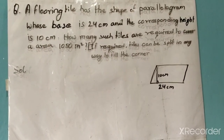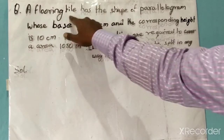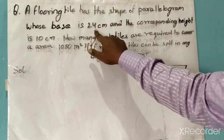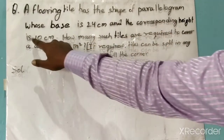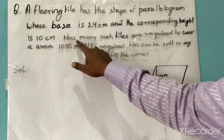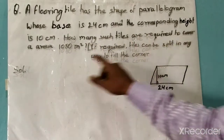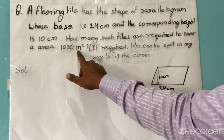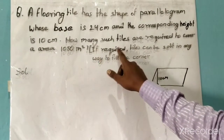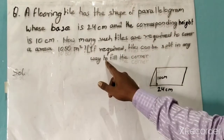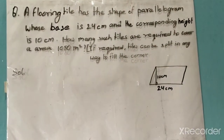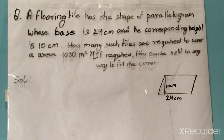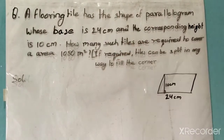Today's question is: a flooring tile has the shape of a parallelogram whose base is 24 centimeters and the corresponding height is 10 centimeters. How many such tiles are required to cover an area of 1080 square meters, if required tiles can be split in any way to fill the corners? Please watch the video till the end so that the concept will be clear.